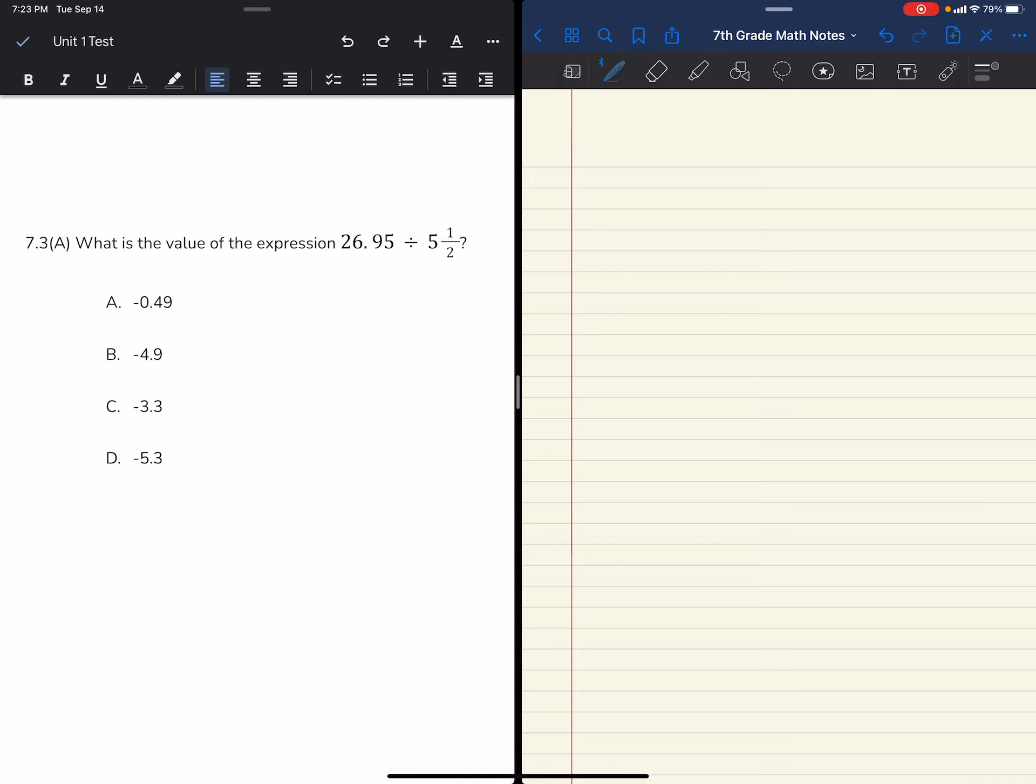Okay, I'm going to, since my answers are in decimals, I will change the 5 and 1 half to a decimal. And I know that 1 half is 0.5. If you have half of a dollar, it is 50 cents.